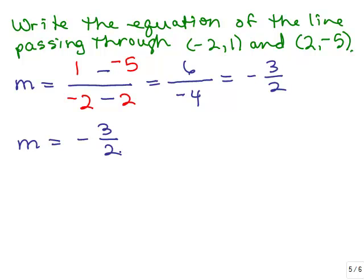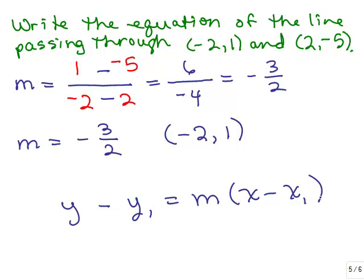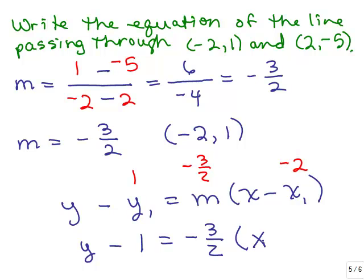To use the point-slope formula, I just need to use one of those ordered pairs — it doesn't matter which one. Let's choose negative 2, 1. We're going to use the point-slope formula: y minus y1 equals the slope times, remember your parentheses, x minus x1. We're going to put in negative 3 halves for the slope. Negative 2 is your x1 and 1 is your y1. This gives me y minus 1 equals negative 3 halves times x minus negative 2, so x minus negative 2 will be x plus 2.